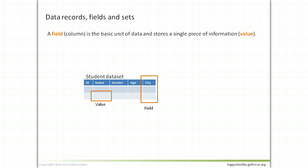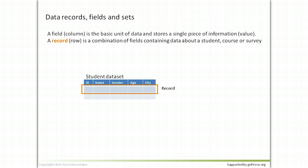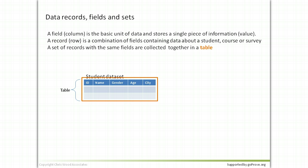Let's have a look at a few definitions. A data field is a basic unit of data and stores a single piece of information or a value. A record is a combination of fields containing data about a student, a course, or a survey. And a set of records with the same fields are collected together in what's called a table.